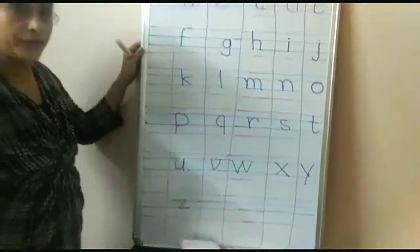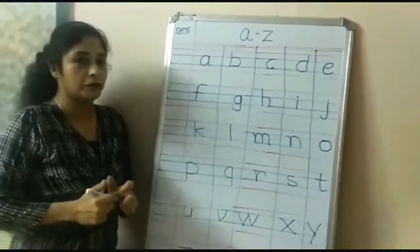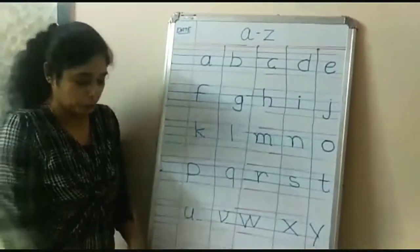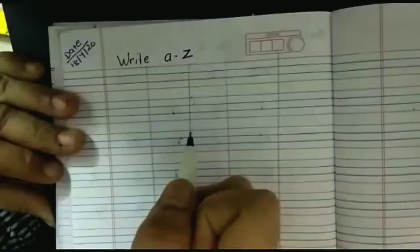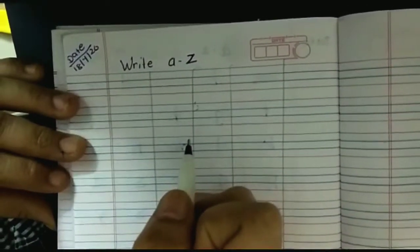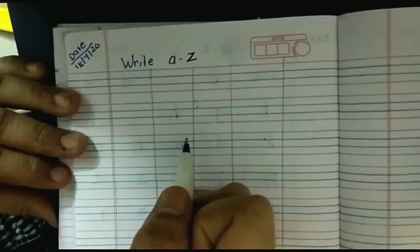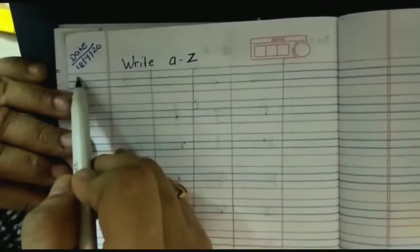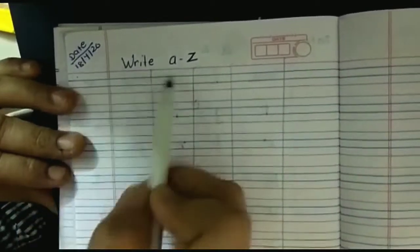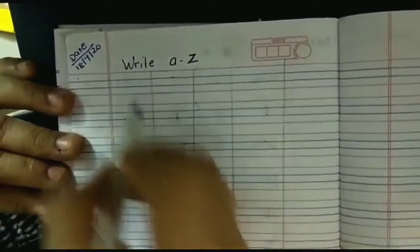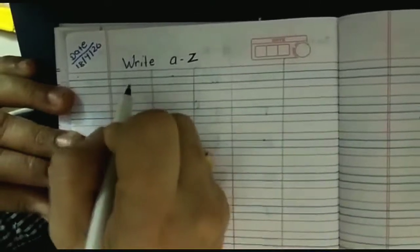Okay, now teacher is showing you how to write in a notebook. So children, let's start our writing. First of all, write the date, write the topic, and we will start writing.